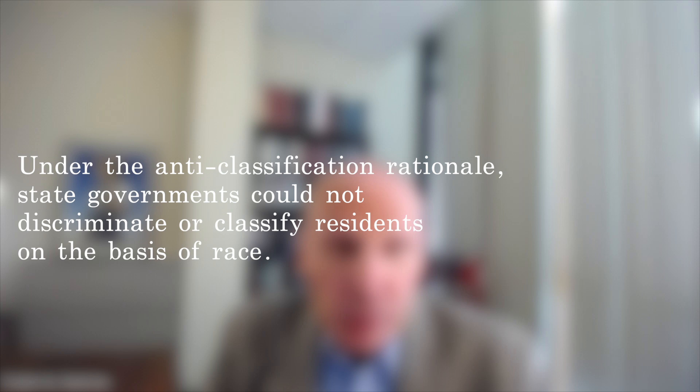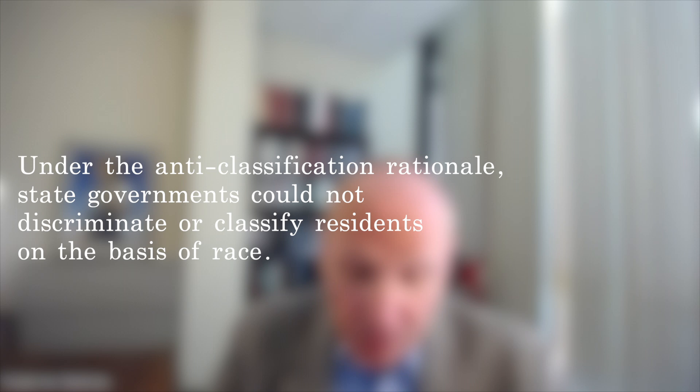A lot of members of Congress supported this anti-classification rationale because they thought that racially neutral laws would eliminate racial discrimination from society generally. Other members of Congress thought that the clause had a broader and frankly more radical purpose — that of anti-subordination, of prohibiting and preventing a racial caste system which would confine minority races and ethnicities to a permanent underclass or a permanent inferior status.